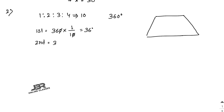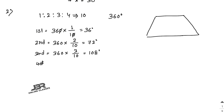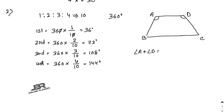The second angle = 360 × (2/10) = 72°. The third angle = 360 × (3/10) = 108°. The fourth angle = 360 × (4/10) = 144°. Label the quadrilateral ABCD.